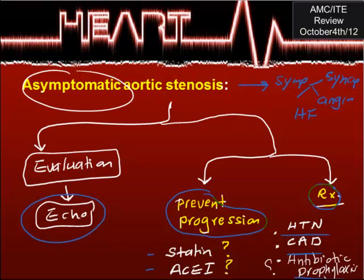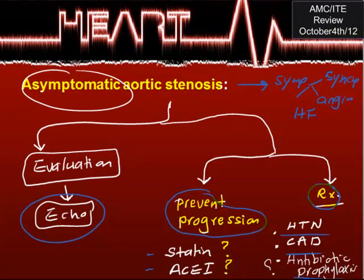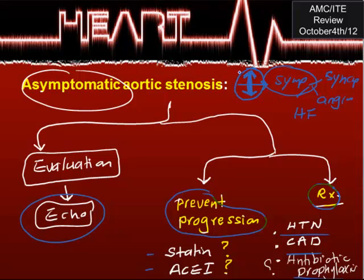Hello and welcome to the internal medicine board review series. We are talking about cardiology, and today's topic is asymptomatic aortic stenosis evaluation. The rationale for treating asymptomatic aortic stenosis is that once it becomes symptomatic, there are serious comorbidities — syncope, angina, and heart failure — which can be causes of death. So we need to decrease and stop any progression of aortic stenosis.